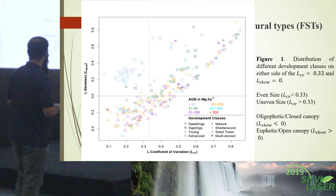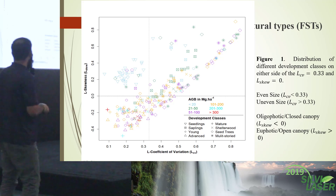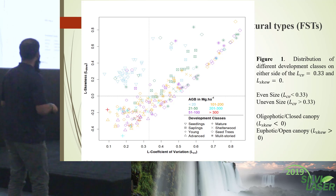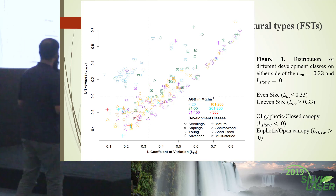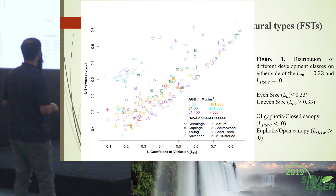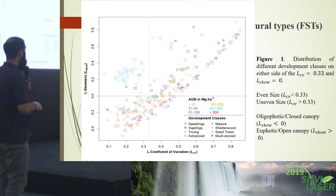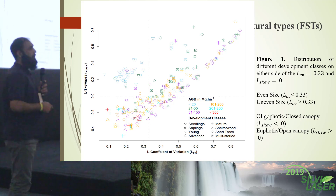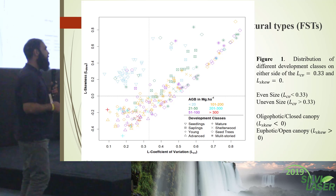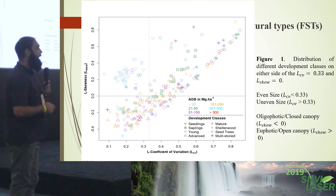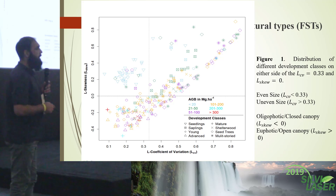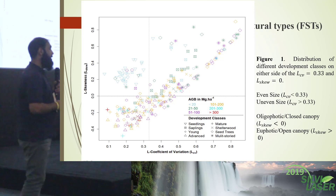The shelter wood class is mostly even size, but here most of the shelter wood was separated as uneven size, probably because of the omission of the understory. Our point density was 0.91 points per square meter, and at least three points per square meter are required for reliable structural classification, particularly for the Gini-equivalent classification.